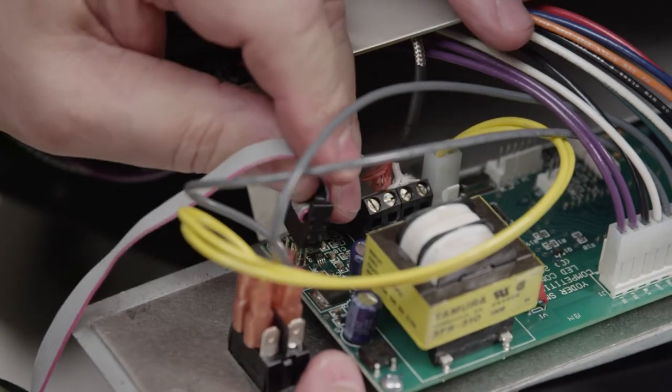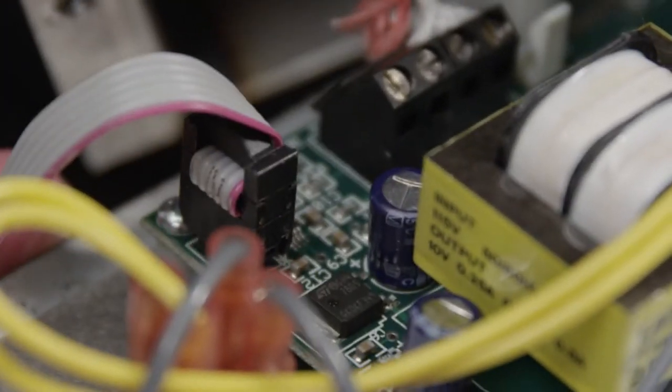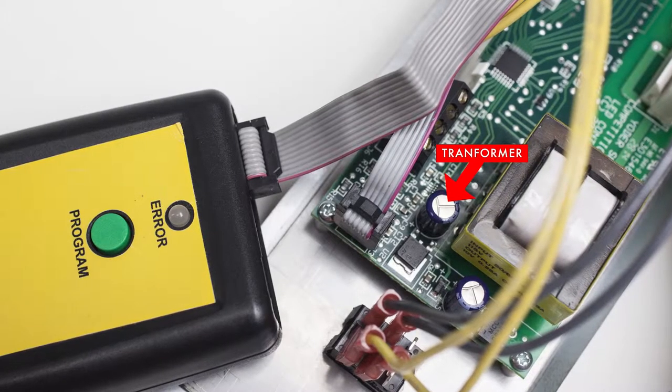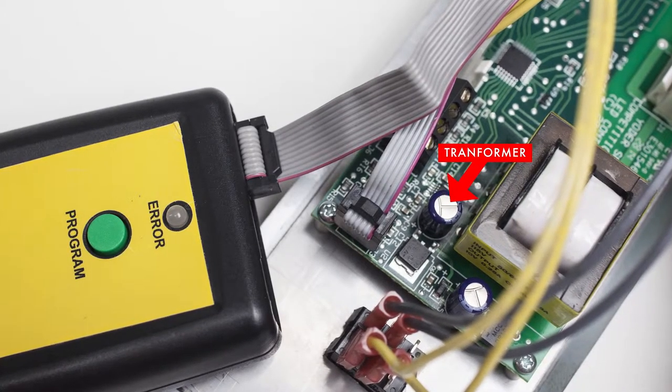First, insert the 6-pin female plug of the ribbon cable into the 6-pin terminal block on the control panel. The correct orientation is with the red wire of the cable up closest to the transformer.